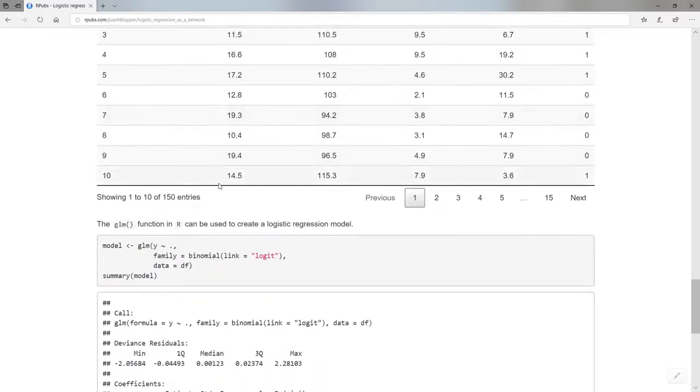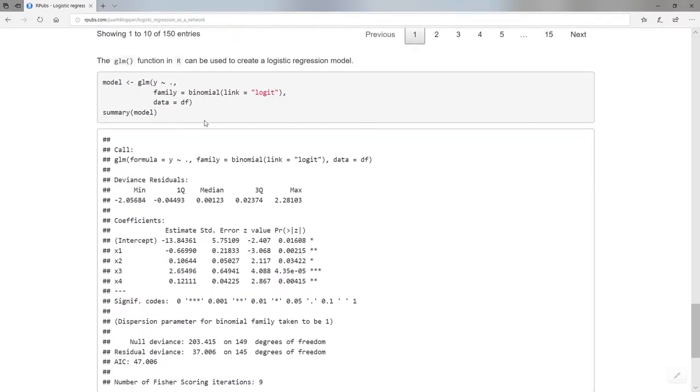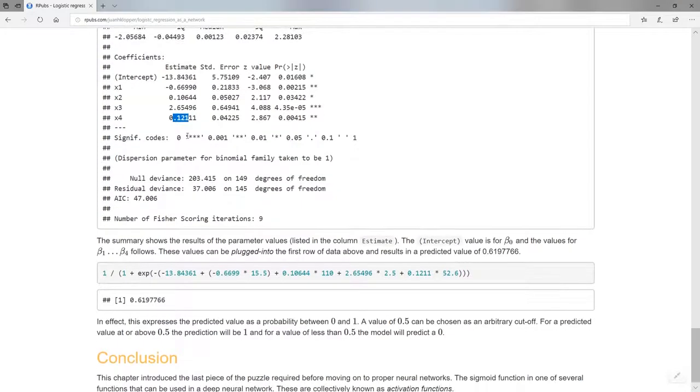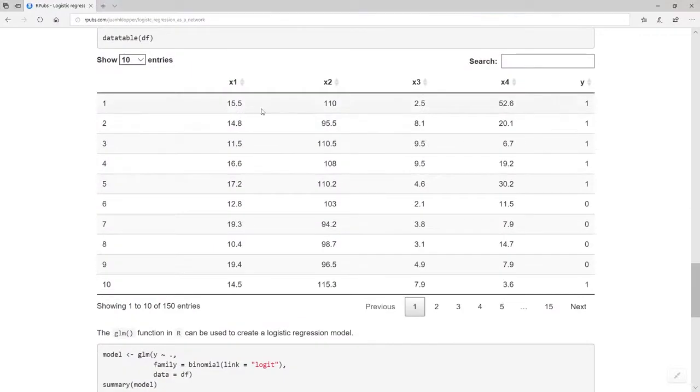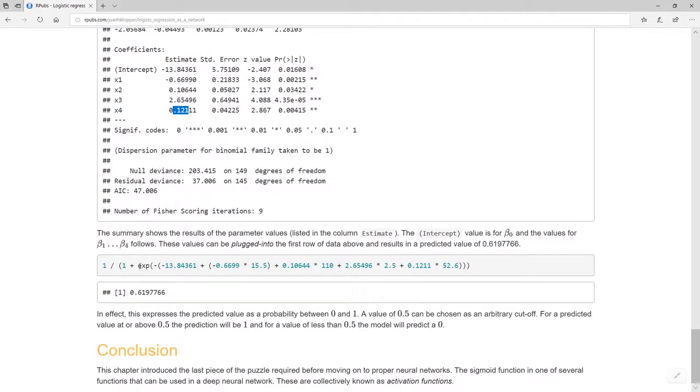Fortunately for us in R there is the GLM function—generalized linear models. I can plug in all my values: y being predicted by that dot, which is just shorthand for x sub one, x sub two, x sub three, and x sub four. It uses a logistic regression model here with a binary outcome. If we look down here at the estimate column, we see there are our beta values: beta sub zero negative 13.8, beta sub one, beta sub two, beta sub three, beta sub four.